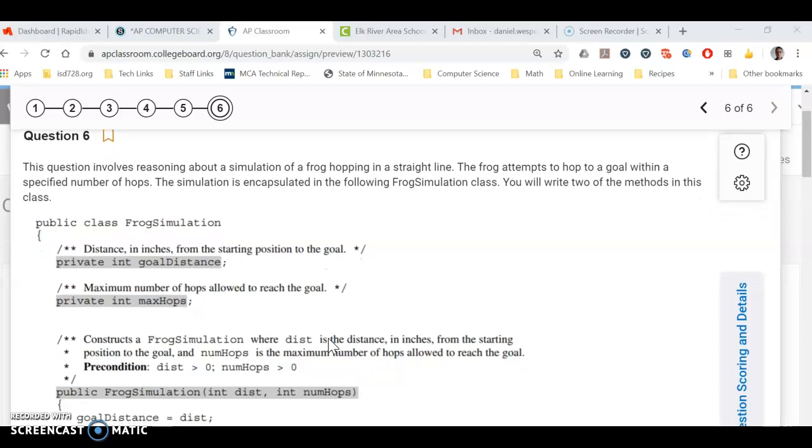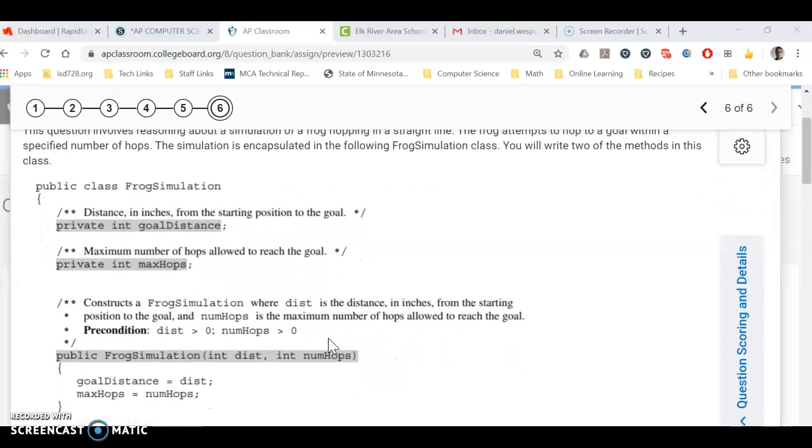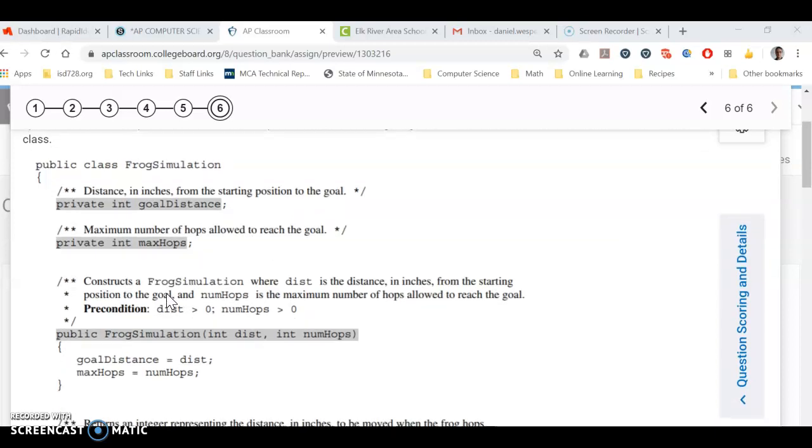So this is a frog simulation, and we have a frog that's hopping that can hop both forwards and backwards. One of the tricky parts about this is the variables aren't passed into the method necessarily, especially on part A. They are set by a constructor.